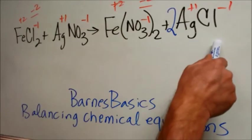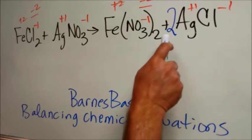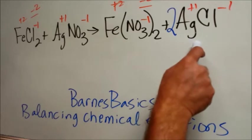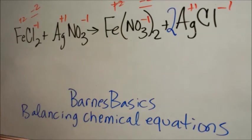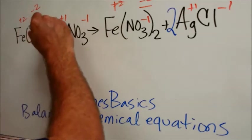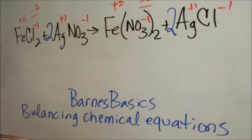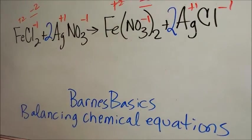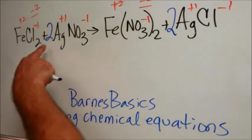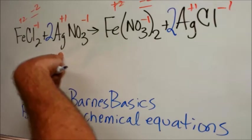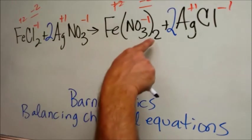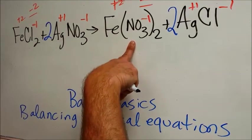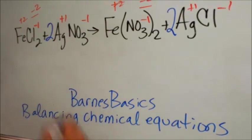We have two chlorines and two chlorines. Good. Now we have two silvers. We have one here. So remember we put coefficients. Once we balance the individual formulas, we don't play with the subscripts. So we now have two silvers, but we have two nitrates. Well, look at this. We have two nitrates right there. And I think we are good to go.